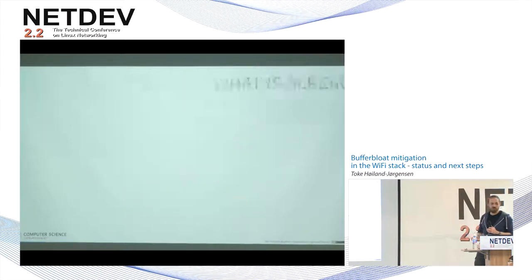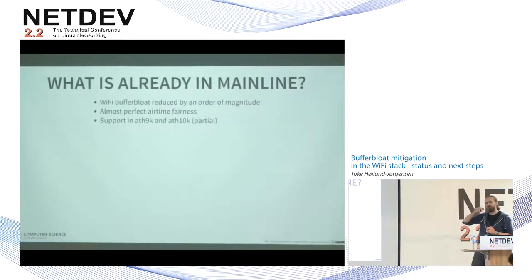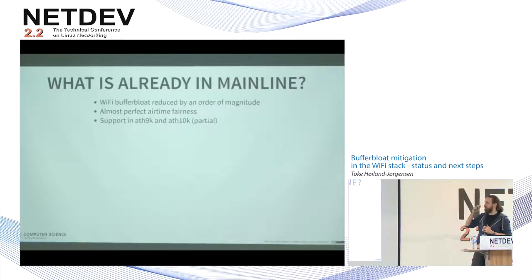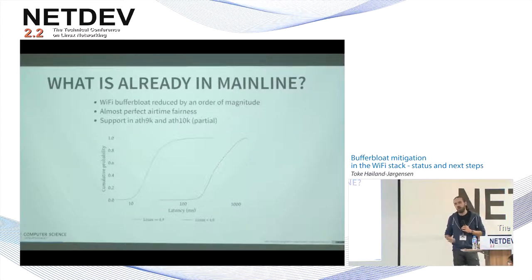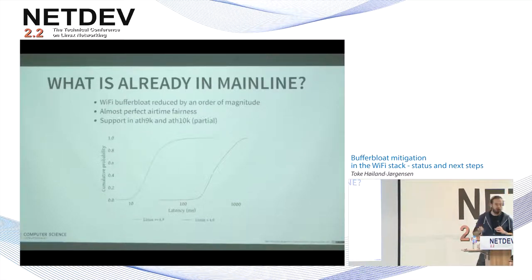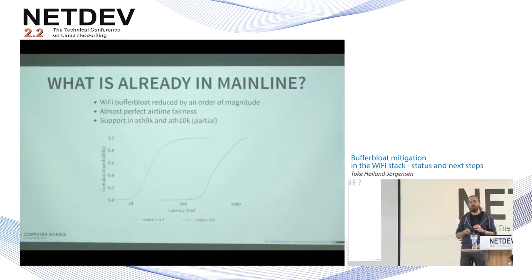So that's a bit of the background. What we already did — which is in mainline since somewhere between 4.9 and 4.11 — is we've reduced buffer bloat by an order of magnitude. Before 4.9, with a normal FIFO QDIS you got 500 milliseconds of latency under load; now we're down to around 20. We also have almost perfect airtime fairness in the driver, supported in ATH9K. ATH10K only has the buffer bloat fixes, and we're working on expanding this to basically all drivers.